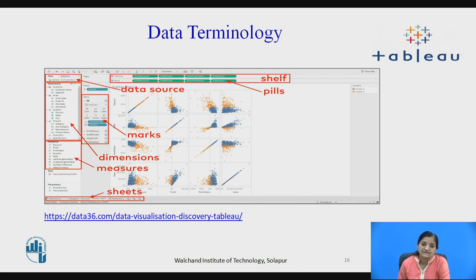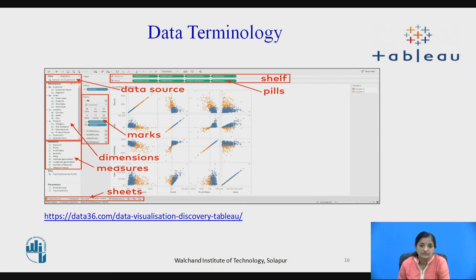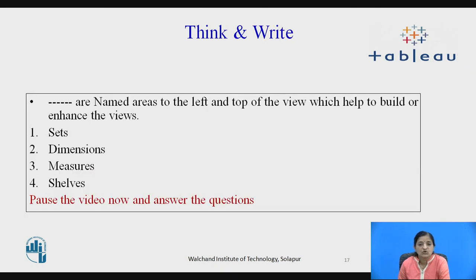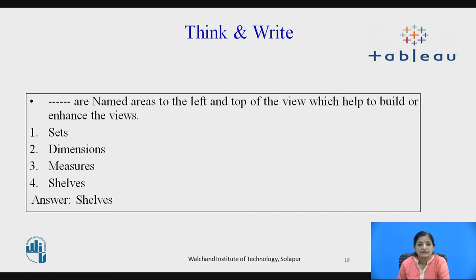Now let's see some of the terminologies on this screenshot. On the left side, you can see the data source pane with a list of dimensions and measures. On the top, you can see the row shelves and various page shelves. There are marks which are used to control the formatting of individual fields. On the bottom is a collection of worksheets together forming a workbook. Now let's pause the video — think and write: shelves are the named areas to the left and top of the view which help to build or enhance the views by dragging and dropping the required dimensions and measures onto them.